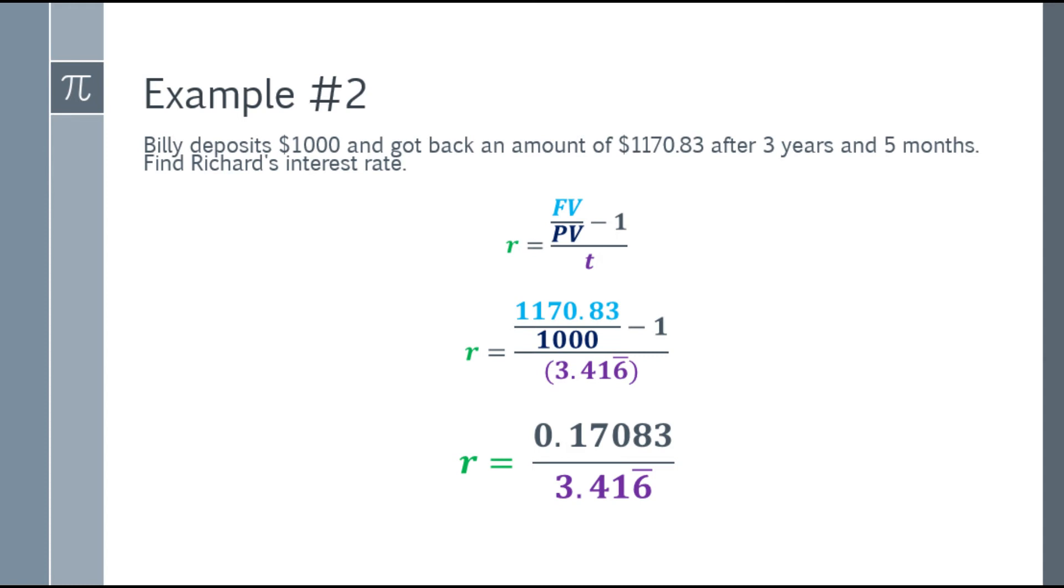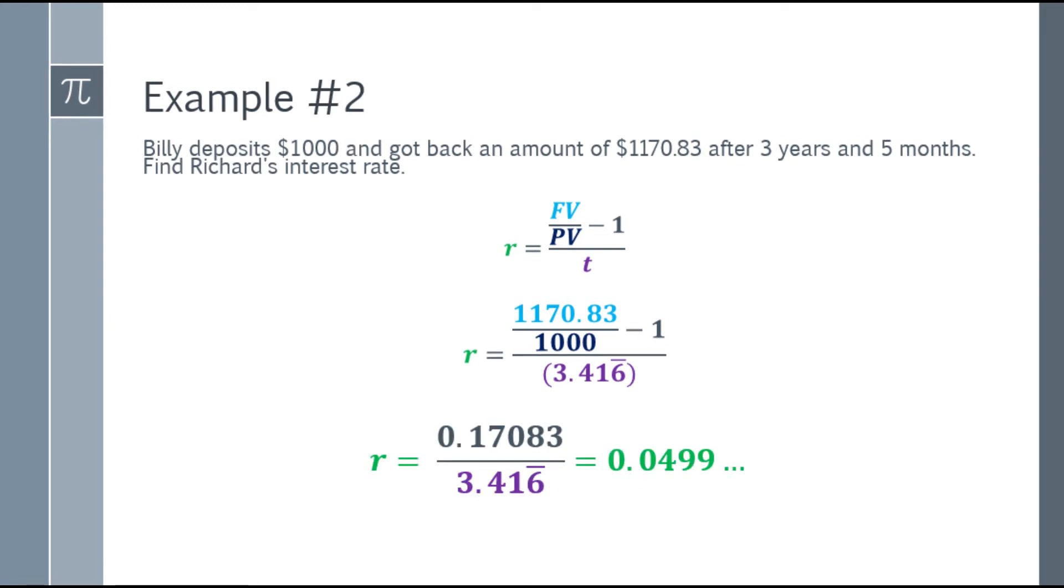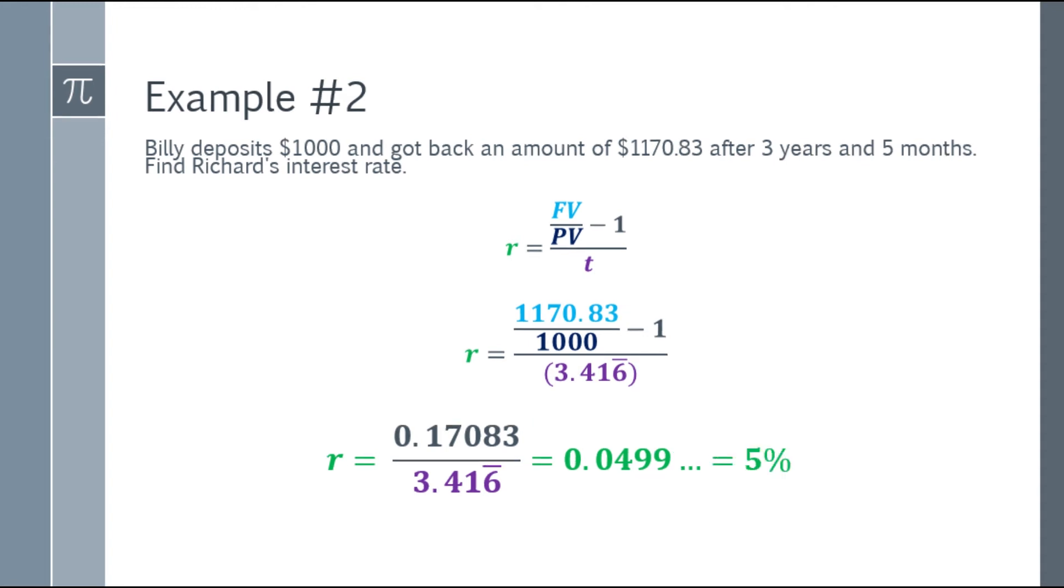Now simplify it further. Numerator divided by denominator: 0.17083 divided by 3.416 repeating decimal, and you will have the answer of 0.0499 continuing. We multiply it by 100, and the answer is 4.99. Add the percent sign. That is 4.99 something, so I rounded it up, that will be 5%. So Billy deposited $1,000 and got back 1,170.83 after 3 years and 5 months, the interest rate of the bank is 5%.